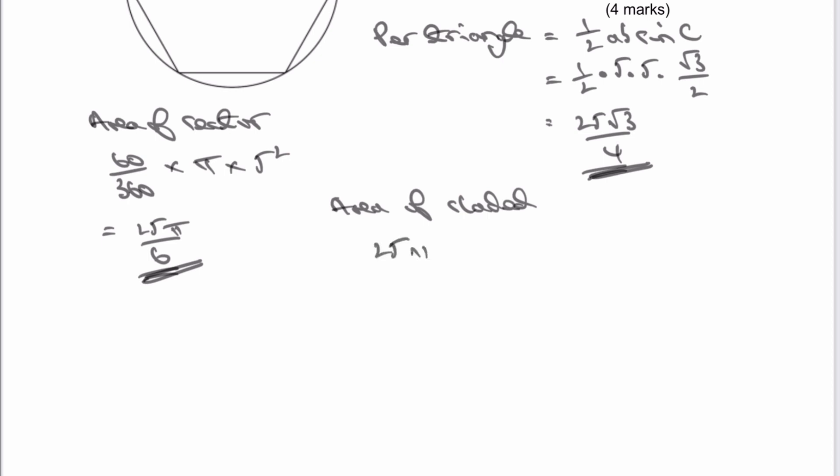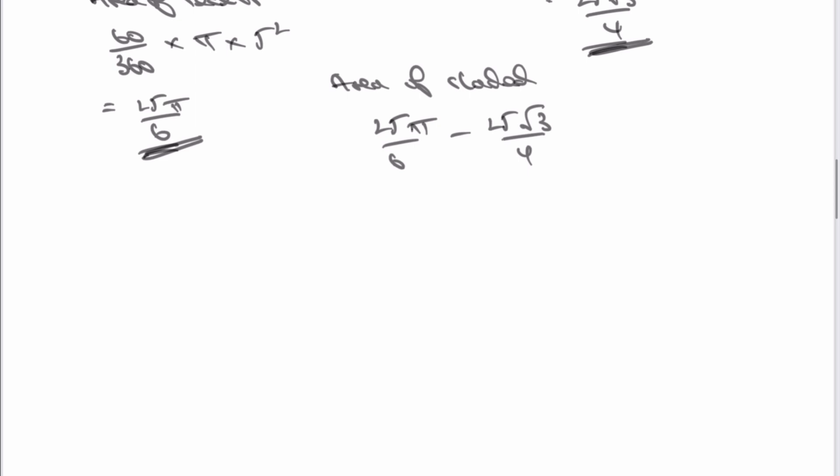So I'm going to get 25 pi over six minus 25 root three over four. Now it looks a little bit tricky, but effectively we can just treat it as normal fractions. So we can actually say that both are going to have a common denominator of 12.